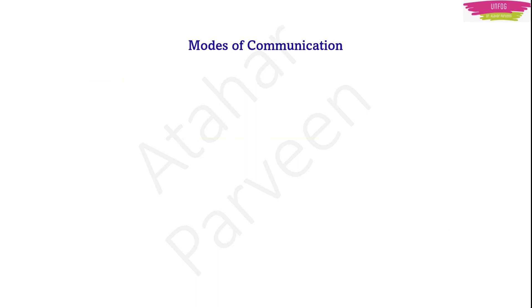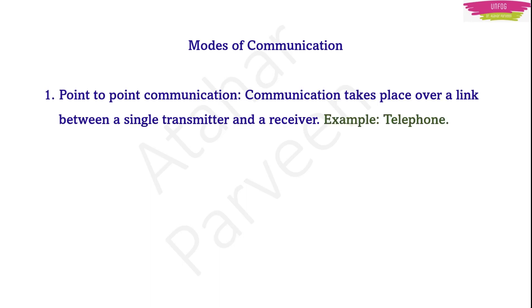How can this communication be done? What are the modes of communication? There are two basic modes. The first one is point-to-point communication, where communication takes place over one link between one transmitter and one receiver. Telephone is the best example — when I talk over phone, I talk to a single person. That is point-to-point communication.